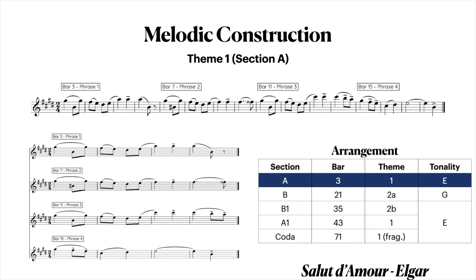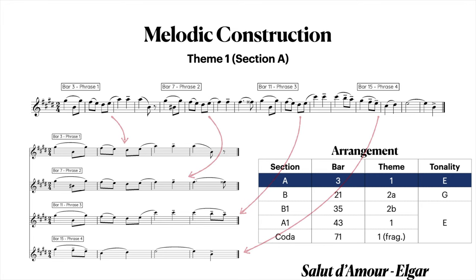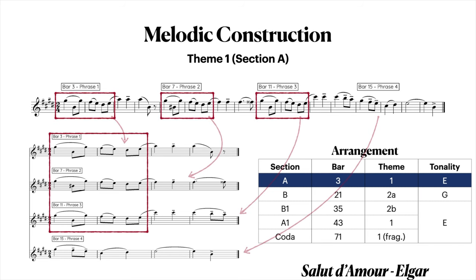I am always amazed by Elgar's concision when it comes to melody. He was remarkably economical in his control of melody and motif, and Salut d'amour demonstrates this in a shorter form composition. I've extracted Theme 1 from Salut d'amour and laid each of the phrases out vertically. Similar to John Williams' melodic construction in Forks of Phoenix, we can see the first two bars — what we might call the antecedent of each of the first three phrases — are alike. The only variation in these bars comes in bar 7 with the melodic chromatic alteration of the note B to B sharp.